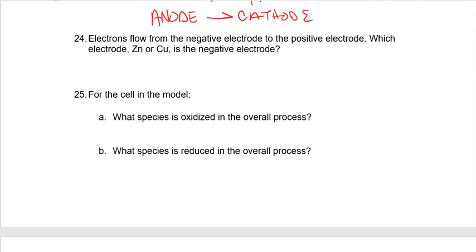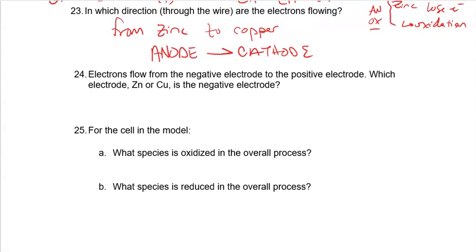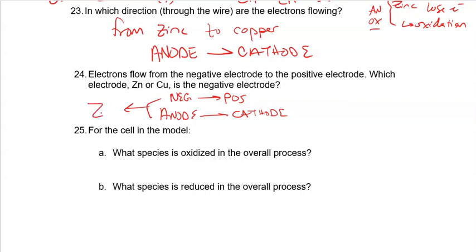Electrons flow from the negative electrode to the positive electrode. Since electrons flow from anode to cathode, our anode is the negative electrode and our cathode is the positive electrode. Therefore, zinc is our negative electrode.